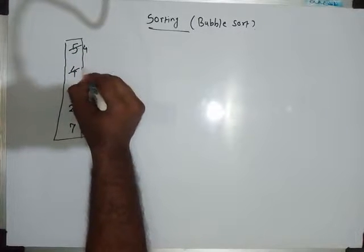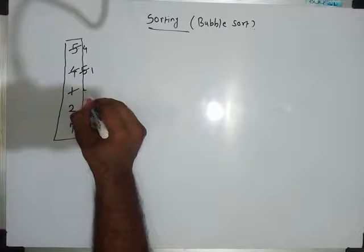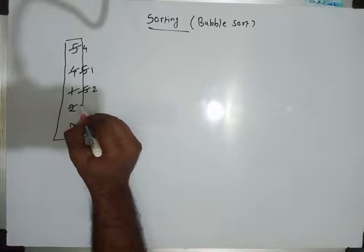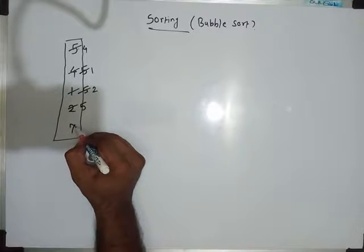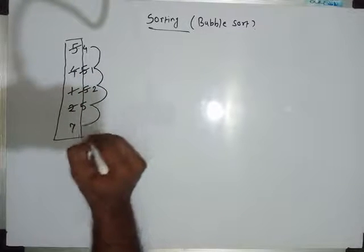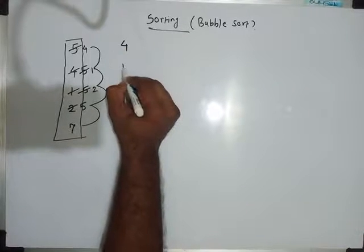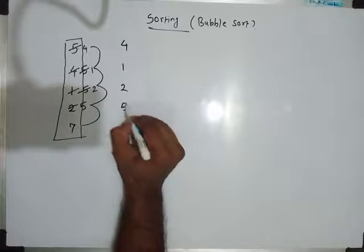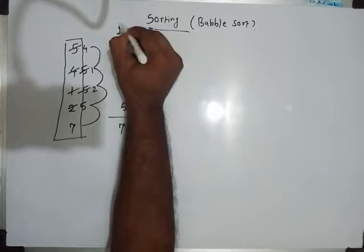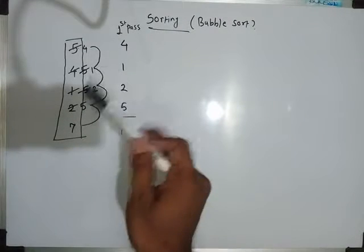I bring 4 here and 5 here. Then I compare 5 with 2: 5 is greater than 2 so I swap. I bring 2 here and 5 here. Now 5 is compared with 7: 5 is not greater than 7, so don't swap. The modified array is now 4, 1, 2, 5, 7. We have the largest element at the end. First pass over.